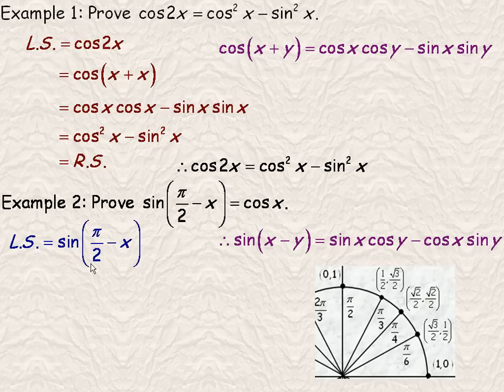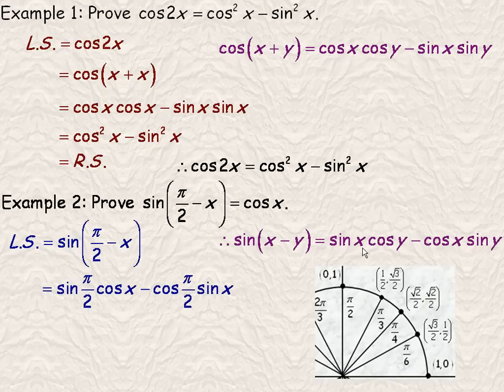And so the x here will be the π/2, and the y, the second variable, will be the x. So we'll put a π/2 here and an x here, so that's why it's sin(π/2) cos x.